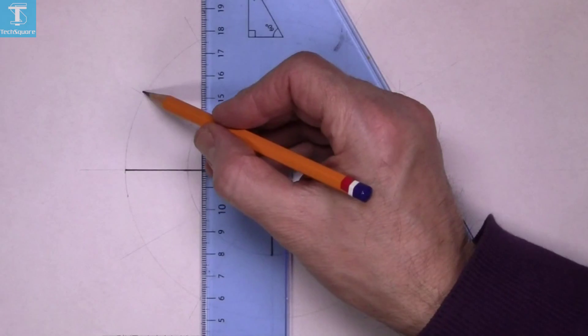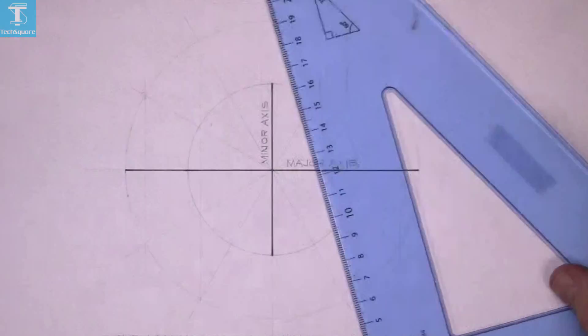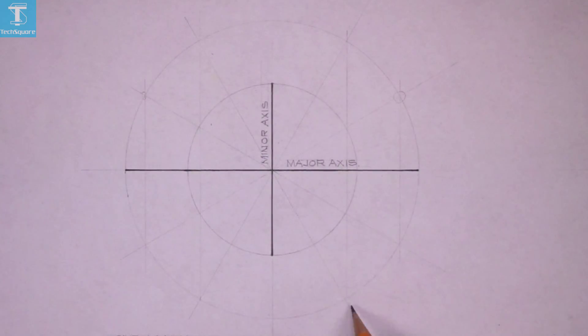That's from that point there now. Now where the line hits the minor circle draw horizontally across or parallel with the major axis.